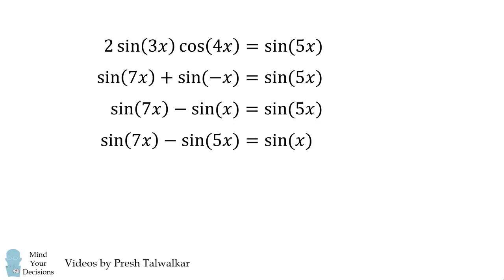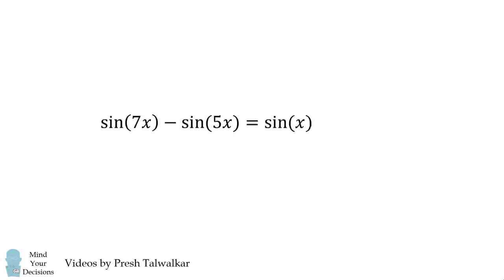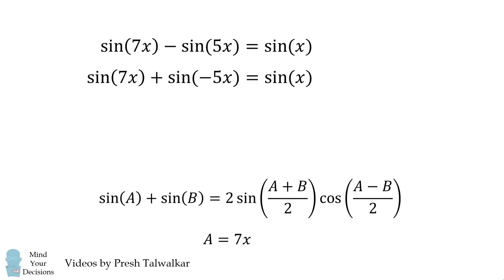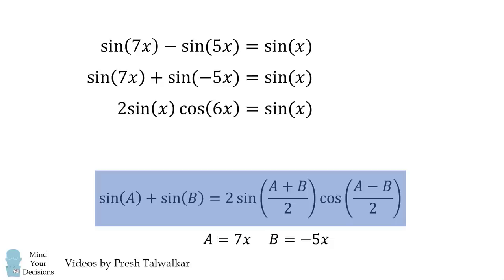Then, negative sine of 5X is equal to sine of negative 5X. From here, we will use the sum to product formula with A equal to 7X and B equal to negative 5X. Substituting into the formula, we get 2 multiplied by sine of X multiplied by cosine of 6X is equal to sine of X.